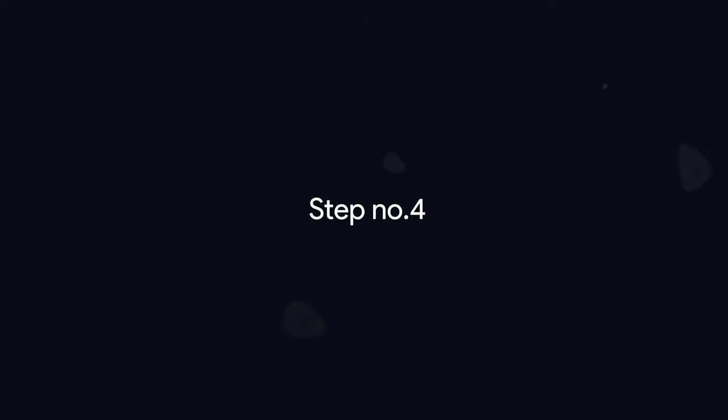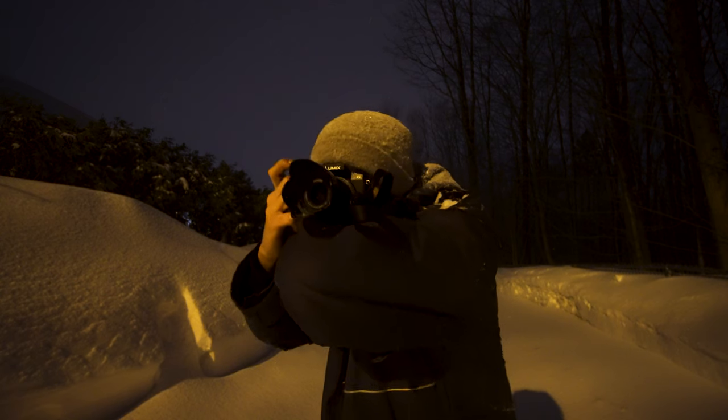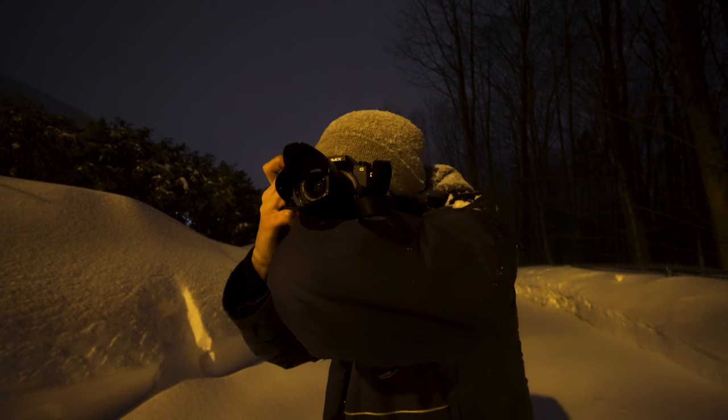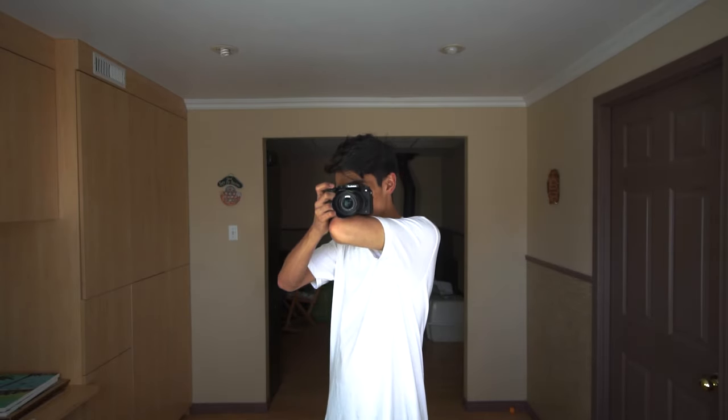Step number four: the elbow stabilizer trick. Okay so let's say all else fails and you really need to use a low shutter speed. Place your hand on your shoulder and then place your camera on your elbow. This helps stabilize your shot so that you can shoot with a lower shutter speed. Anyway, I hope this helps — now go shoot some pictures.